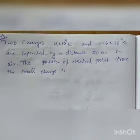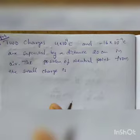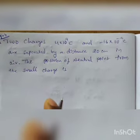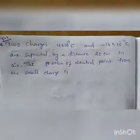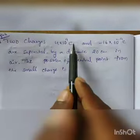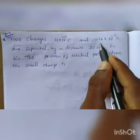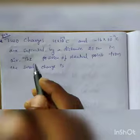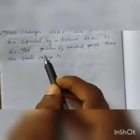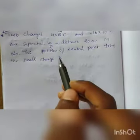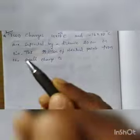Here is a problem based on the neutral point concept. Two charges of values 4×10⁻⁹ C and −16×10⁻⁹ C are separated by a distance of 20 centimeters in air. Find the position of the neutral point from the smaller charge.